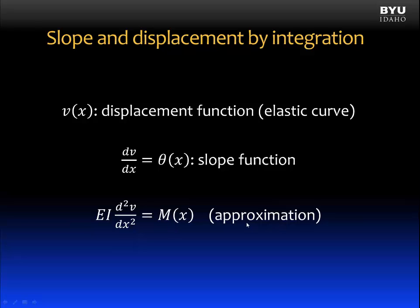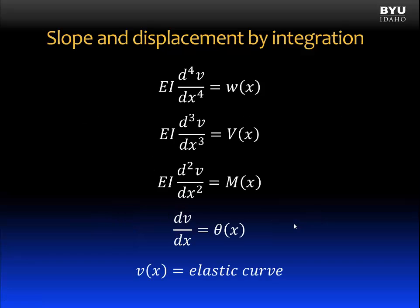It's an approximation, but it's very close. We can couple this with what we learned previously about the relationship between moments, shears, and applied loads. If we start with our elastic curve and take the first derivative, we get the slope. The second derivative multiplied by flexural rigidity gives the moment. The derivative of that gives the shear, and the derivative of that gives the applied load. We can see the direct link between the load and the deformation.